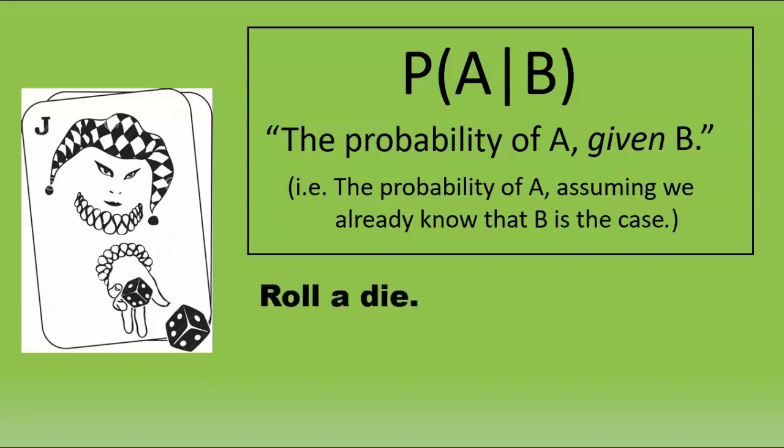For example, roll a die. We know, of course, that the probability of rolling a 6 is 1 in 6. But the probability of 6, given that we know the result is even, is a different story altogether.